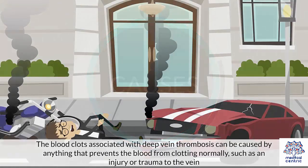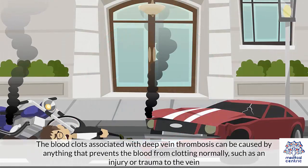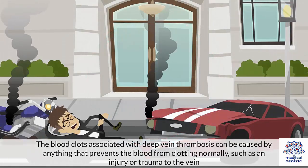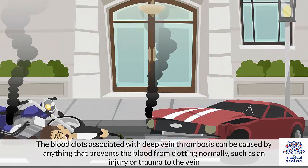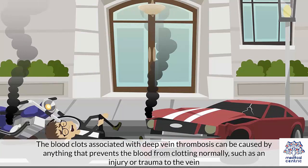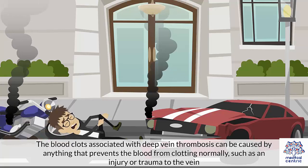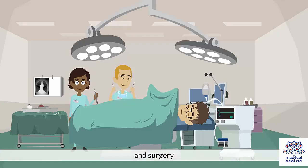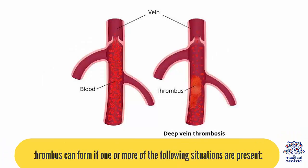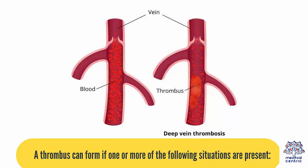Causes. The blood clots associated with deep vein thrombosis can be caused by anything that prevents the blood from clotting normally, such as an injury or trauma to the vein, certain medications, and surgery. A thrombus can form if one or more of the following situations are present.